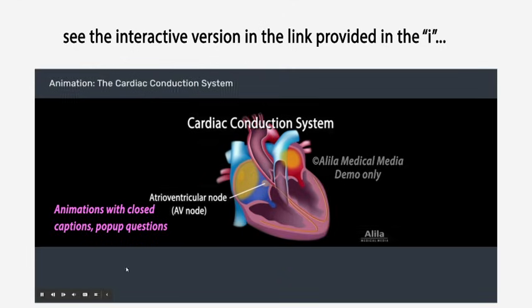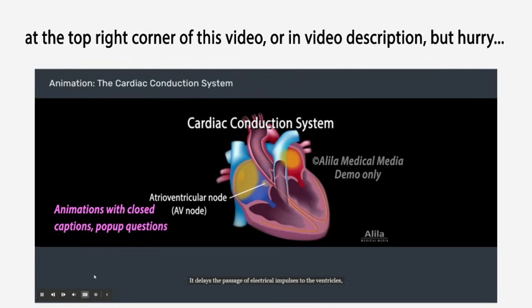The atrioventricular node, or AV node, located on the other side of the right atrium near the AV valve. The AV node serves as the electrical gateway to the ventricles. It delays the passage of electrical impulses to the ventricles to ensure that the atria have ejected all the blood into the ventricles before the ventricles contract.